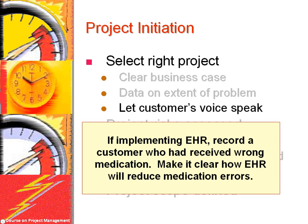For example, if you are implementing an electronic health record, record a customer who received the wrong medication. Make it clear how EHR will reduce medication errors. Efforts spent in clarifying the purpose of a project will help teams remember the importance of their role. They will see themselves as heroes coming to improve the organization, as opposed to enforcers making people work in new and unwanted ways.